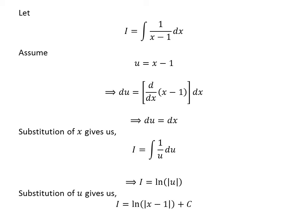As we assumed u equals x minus 1, so I equals the natural log of the absolute value of x minus 1, then we add C. This is the arbitrary constant of integration. Never forget to add this constant at the end of any indefinite integral.